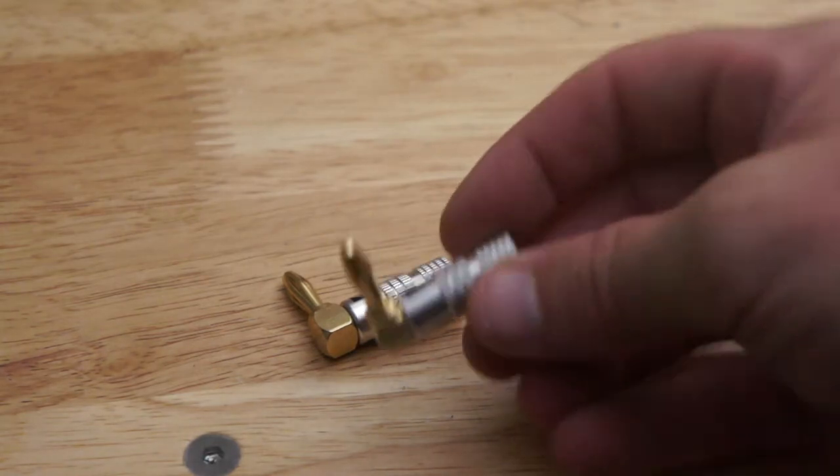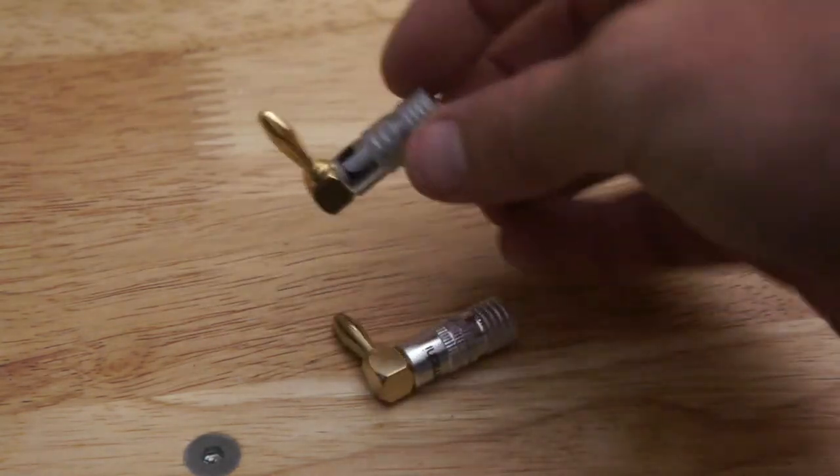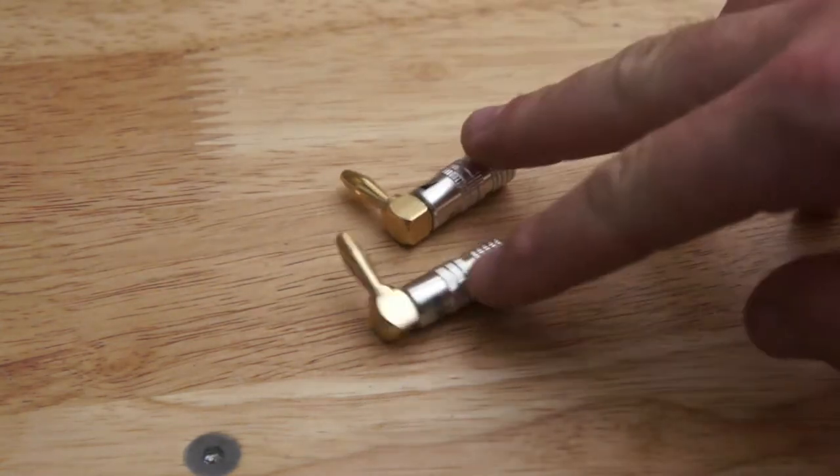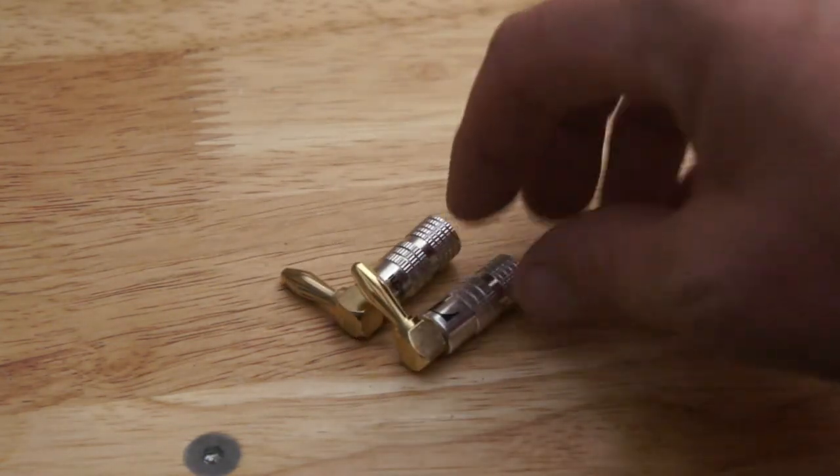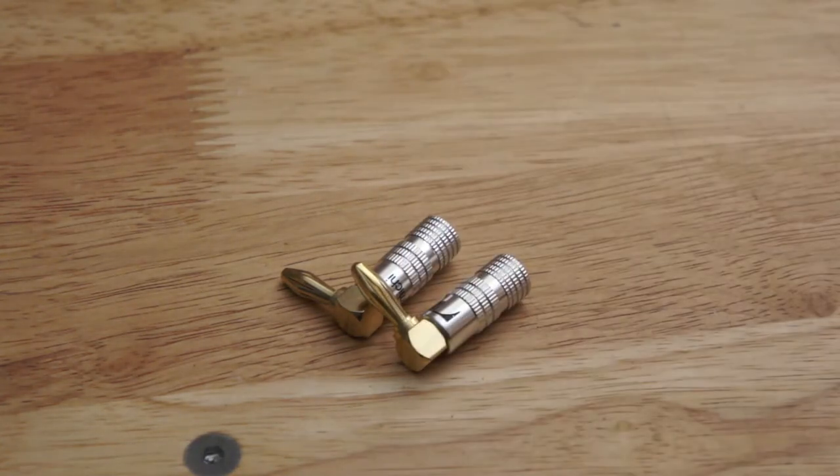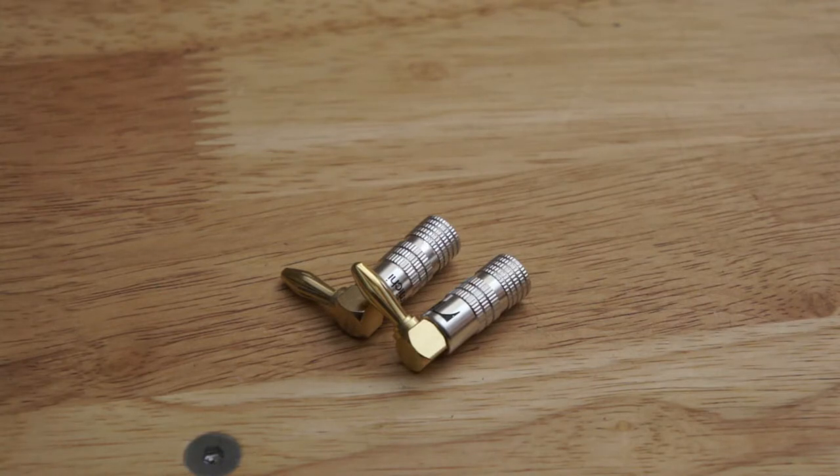When you buy this from Cable Magic you get a pair - one black and one red. You obviously see two black right here, but you will get one black and one red as a pair. These are available from Cable Magic at CableMagic.com.au.